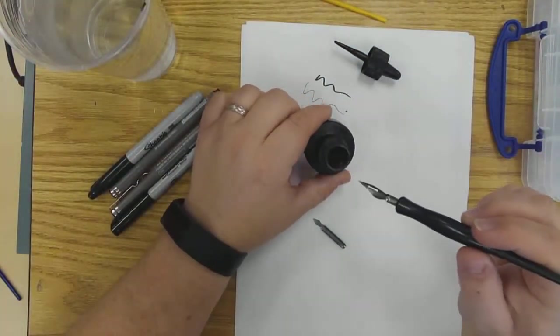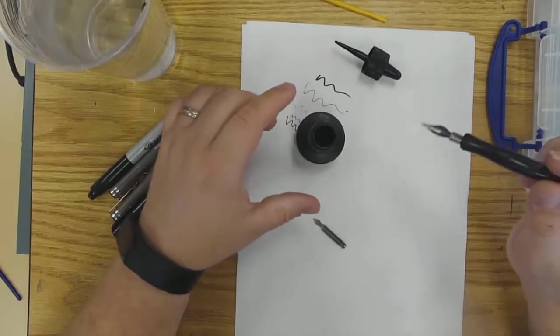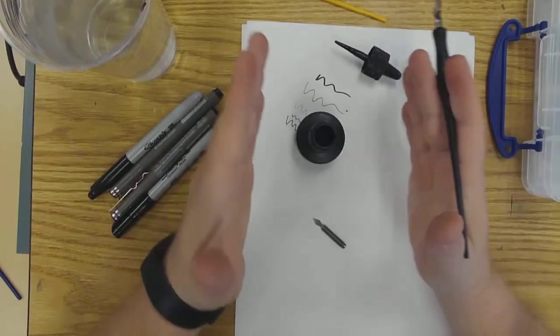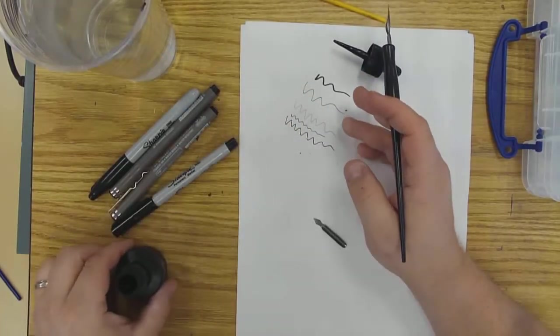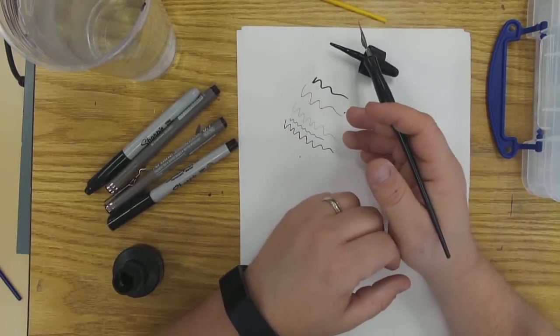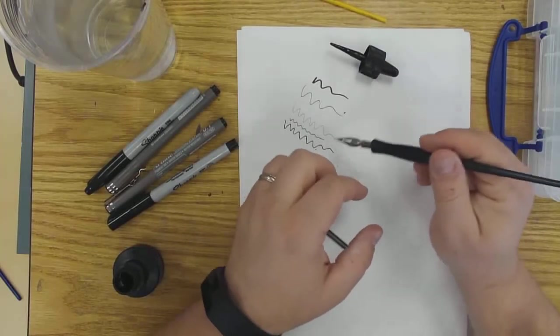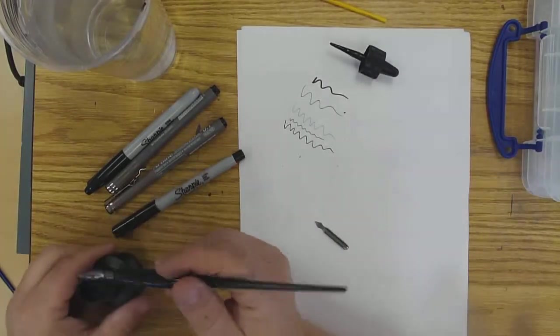You've ruined many shirts and pants by spilling it, so you want to make sure you're really careful. Always keep your ink bottle directly in front of you, never off to the side. That's when accidents almost always happen. If you're drawing and you forget it's there, you move too quick and you knock it over.